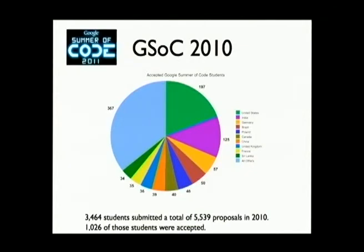This is a breakdown of countries for accepted students in Summer of Code. The green one is the U.S., the purple one is India. Sri Lanka actually came up on the list this year in the top 10 of countries participating — I was pretty amazed, and I think that's awesome that they have a big open source effort in Sri Lanka right now. The big blue blob is basically all the other countries not in the top 10. The right half of that pie chart is the top six countries that have participated.